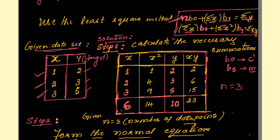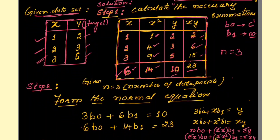For the second equation, we also need summation of x², where x² for the three data points is 1, 4, and 9, giving a sum of 14. Then x·y: you write the products in one column and add them all up to get 23. So the key values are: Σx = 6, Σx² = 14, Σy = 10, and Σ(x·y) = 23, which we substitute into the two equations.